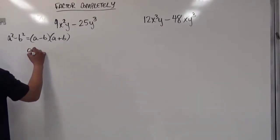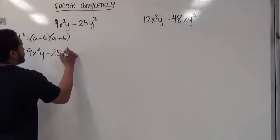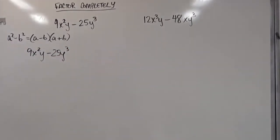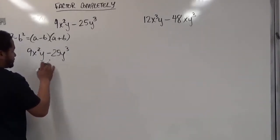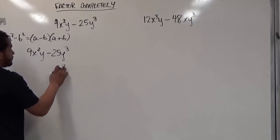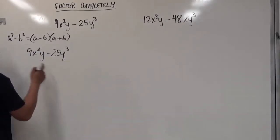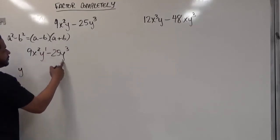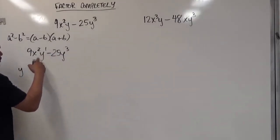We have 9x squared y minus 25y cubed. We're looking at both terms and seeing if they have anything in common. We see both of these terms have a y term in them. The way to factor out the GCF when you're dealing with variables is to take that variable to the smallest exponent that they both have in common. We see here there's a 1, here there's a 3, so we're going to factor out 1y, the y to the first power.